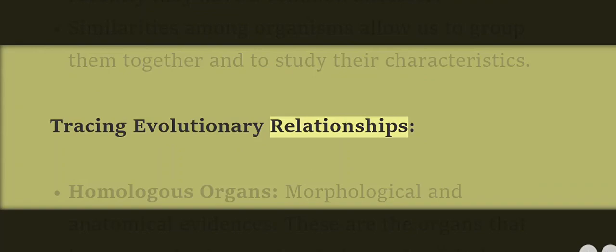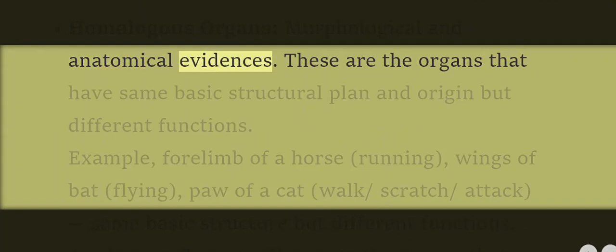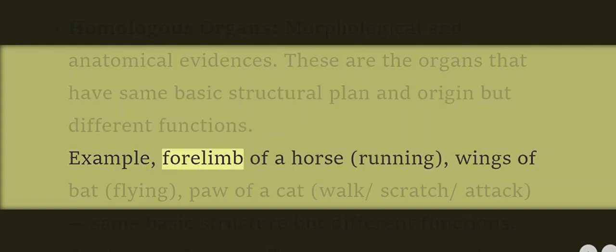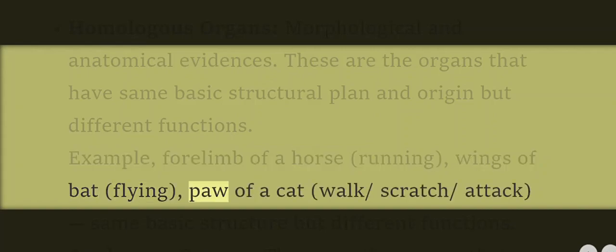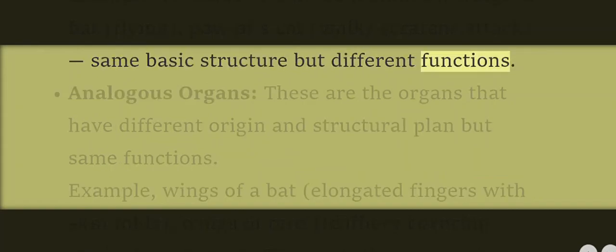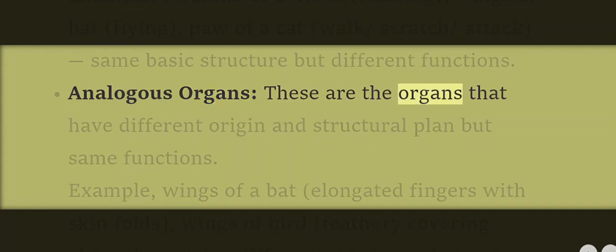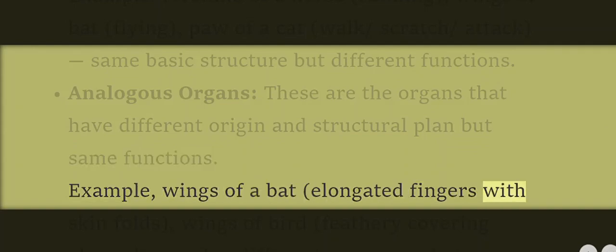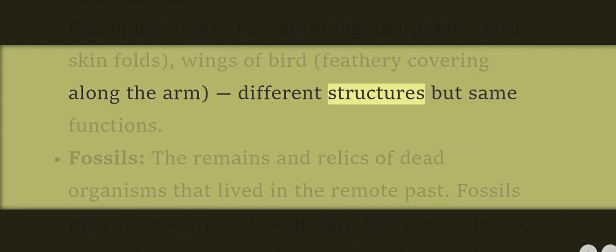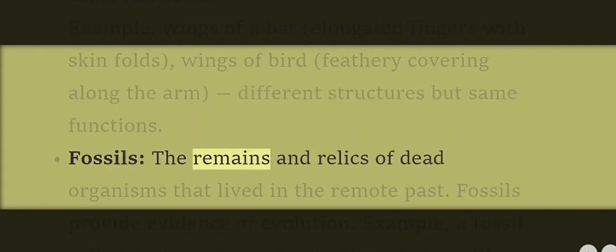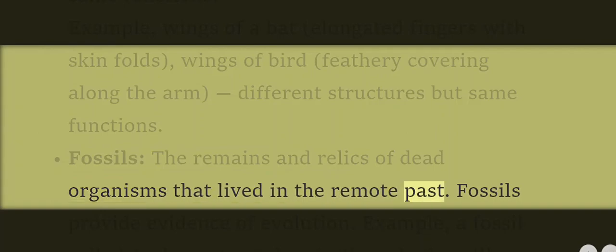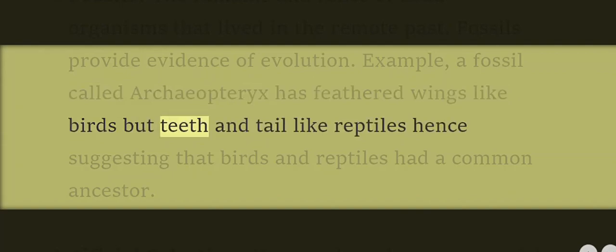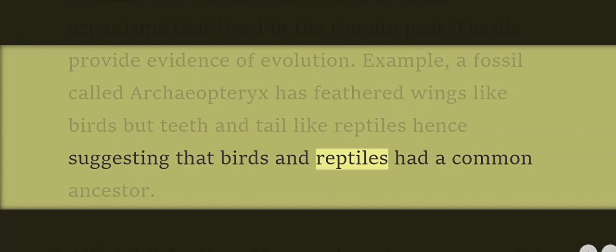Tracing evolutionary relationships: Homologous organs — morphological and anatomical evidences. These are organs that have the same basic structural plan and origin but different functions. Examples: forelimb of a horse (running), wings of a bat (flying), paw of a cat (walk/scratch/attack) — same basic structure but different functions. Analogous organs: organs with different origin and structural plan but same functions. Example — wings of a bat (elongated fingers with skin folds) and wings of a bird (feathery covering along the arm) — different structures but same function. Fossils: the remains and relics of dead organisms that lived in the remote past. Fossils provide evidence of evolution — e.g., the fossil Archaeopteryx had feathered wings like birds but teeth and tail like reptiles, suggesting birds and reptiles had a common ancestor.